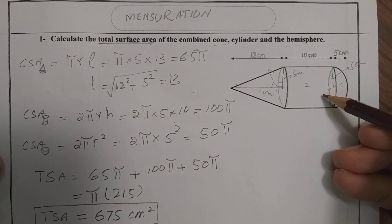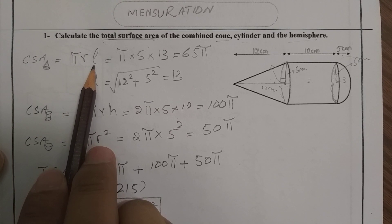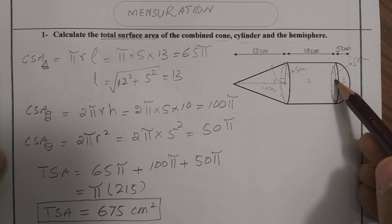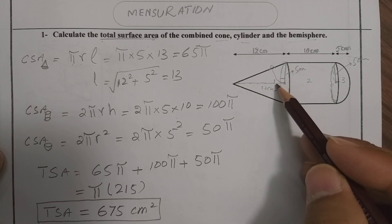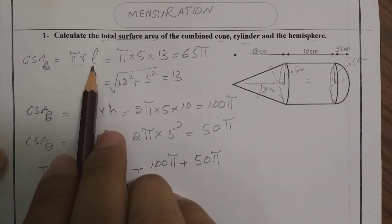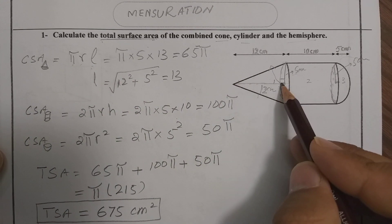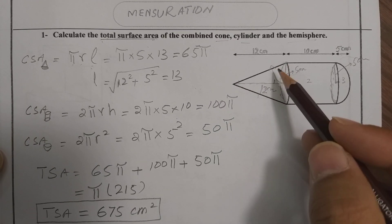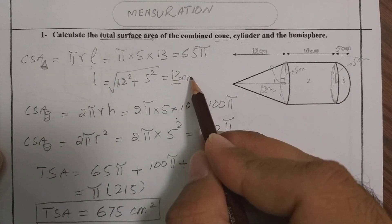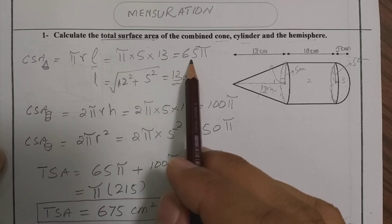First, take the curved surface area of the cone, which is π r l. The radius of the hemisphere is also the radius of the cone and the cylinder. The vertical height of the cone is 12 cm. To find the slant height l, we use the right-angle triangle: l = √(12² + 5²) = √(144 + 25) = 13 cm. Substituting into the formula: π × 5 × 13 = 65π.